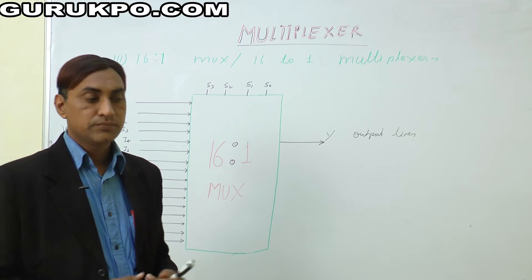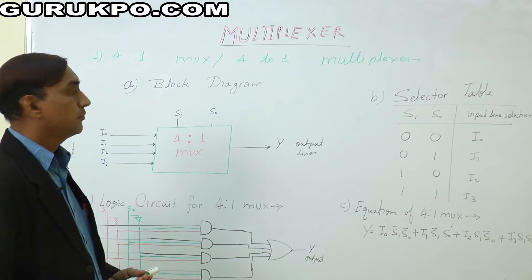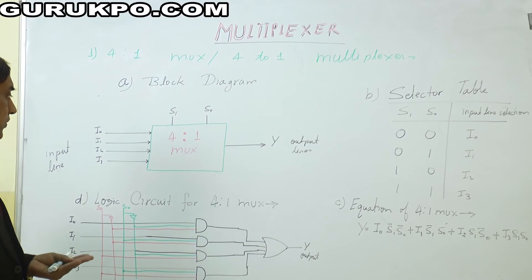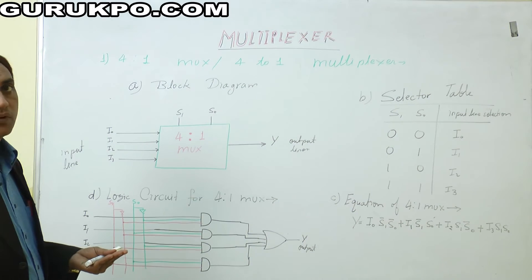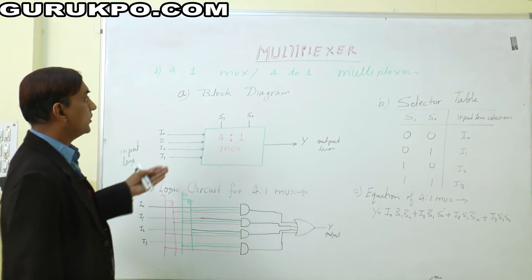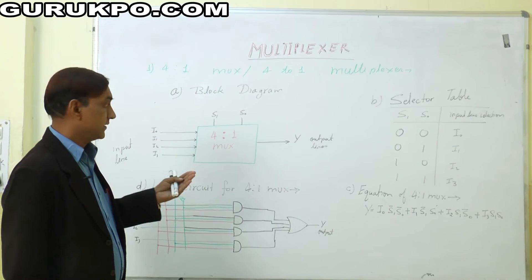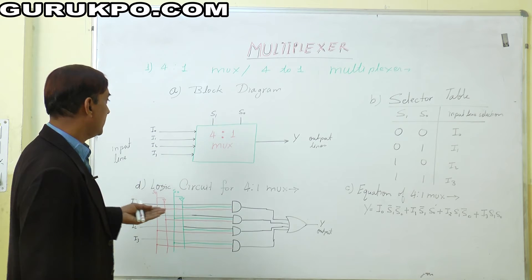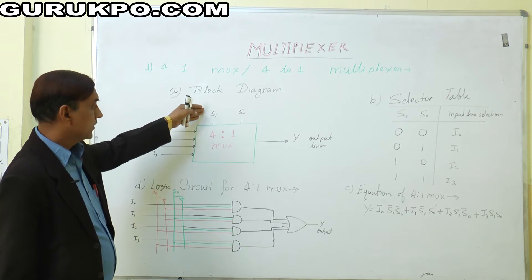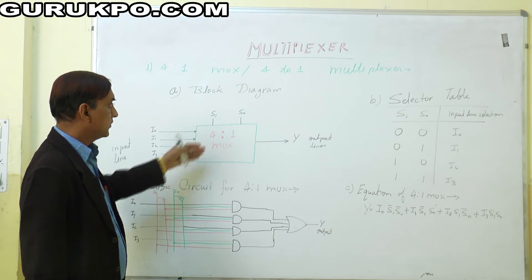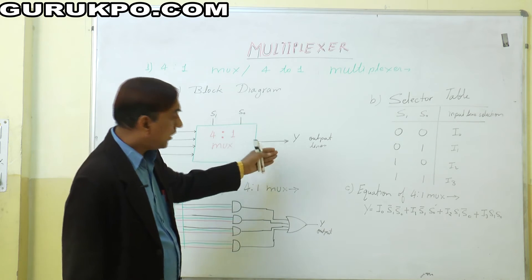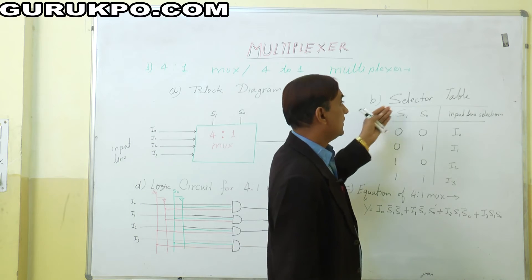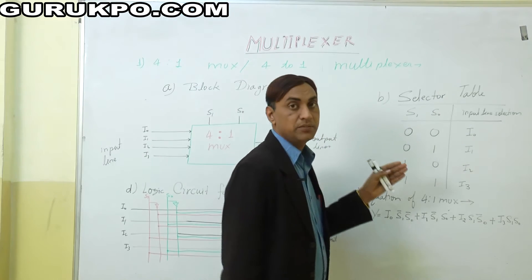Now, how can we design a 4 to 1 multiplexer? We go through 4 steps to design it. First, the block diagram of the 4 to 1 multiplexer — very simple, as previously discussed: 4 input lines, 2 data selectors, and 1 output. Next, we go to the selector table, which decides which input line will be selected.